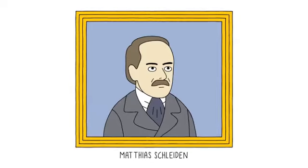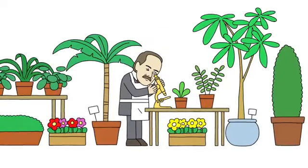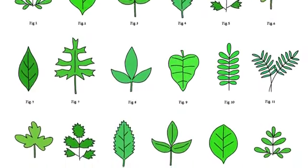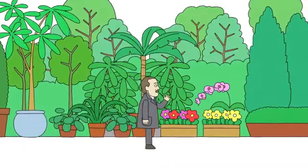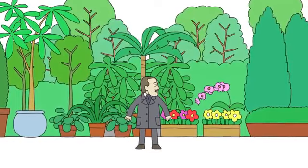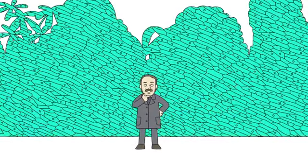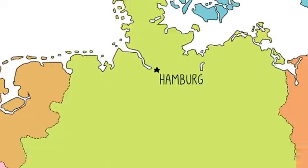The first scientist was Matthias Schleiden, a botanist who liked to study plants under a microscope. From his years of studying different plant species, it finally dawned on him that every single plant he had looked at were all made of cells.